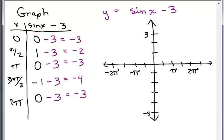Zero, negative 3, right here. These are our key points. π/2, negative 2. Pi, negative 3. 3π/2, negative 4. And 2π, negative 3. And that would be one cycle.